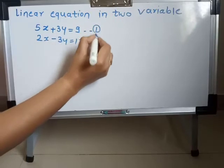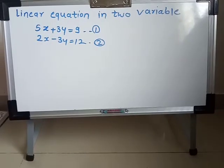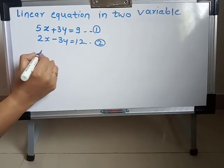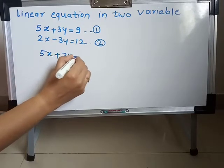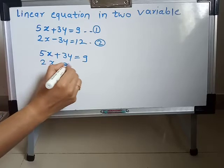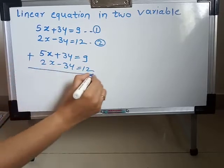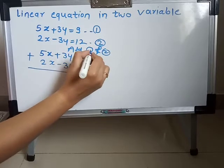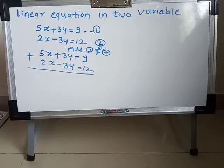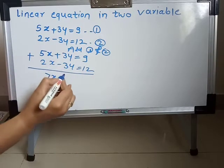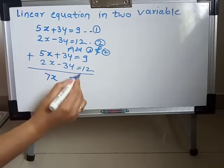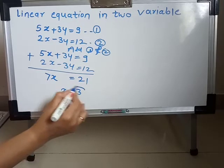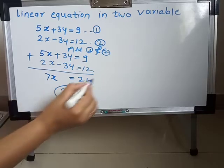We label them equation first and equation second. Notice that plus 3Y and minus 3Y are present, so we can directly add both equations. Write the comment: add first and second. 5X plus 2X is 7X; 3Y minus 3Y cancels; 9 plus 12 is 21. Hence X is equal to 21 divided by 7, which gives X is equal to 3.